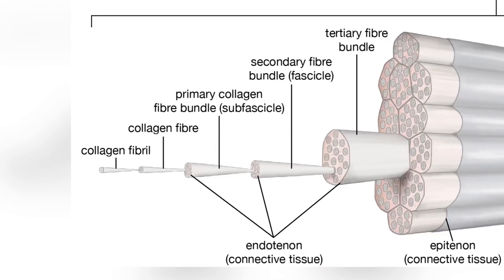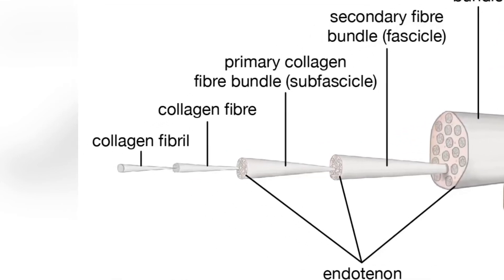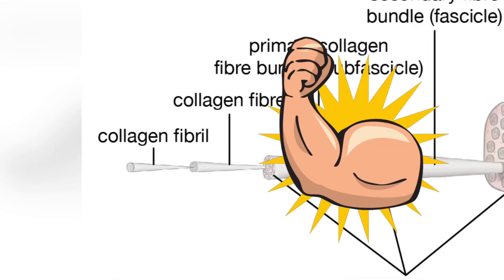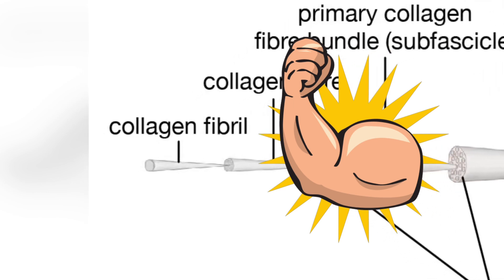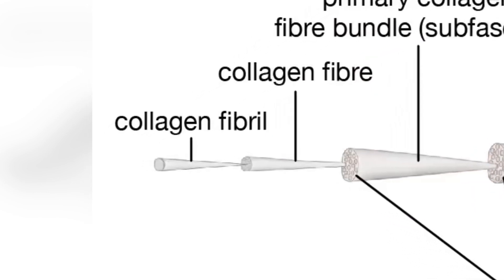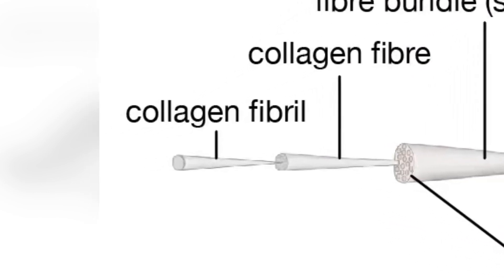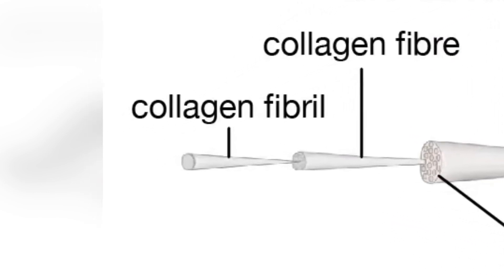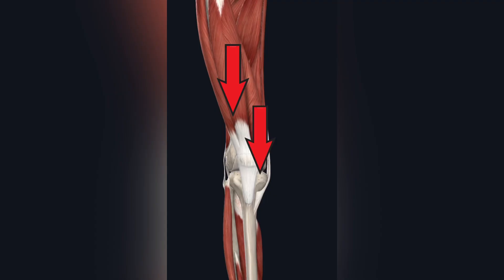If someone has a basic level of knowledge of tendons, they will know that tendons are strong, and they are strong because of the collagens within them. The collagens are what provide the structural integrity of the tendon and let you transmit force from the muscle to the bone.